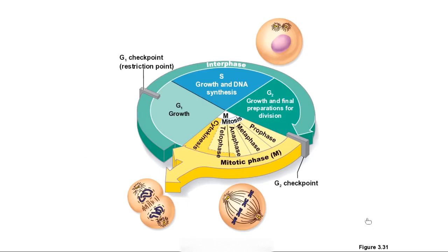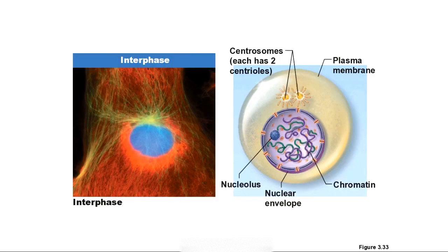Most of the cell's life cycle is in interphase. It's got to grow and double in size, and then the DNA replicates itself. Then we start to actually go through mitosis and cytokinesis.